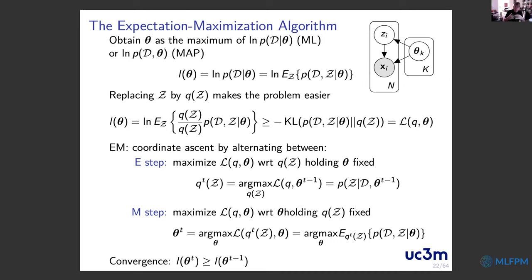However, there is bad news common to all these methods: you cannot demonstrate that the achieved solution is the global optimum. The algorithm only converges to a local optimum. To have a better chance of achieving the global maximum, you should perform several random reinitializations.